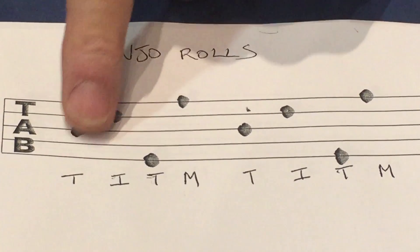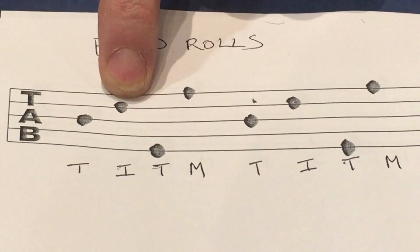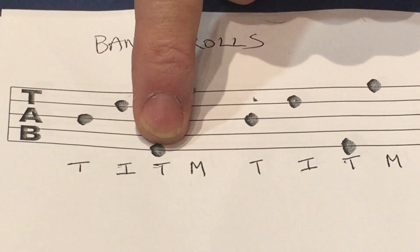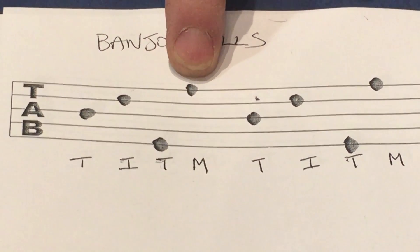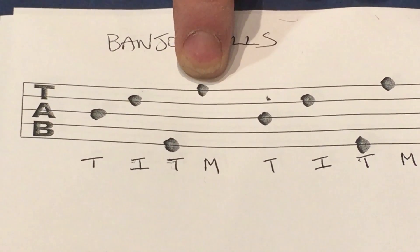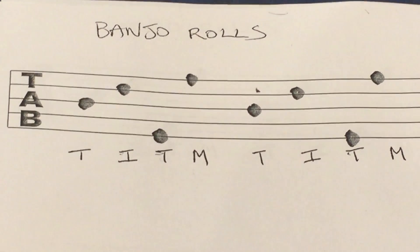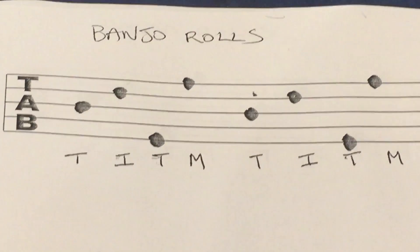And what we're doing, these are the strings on the banjo. This is the G, this is the B, and this is the high string, and this is the D string, the low string. Well it's not the low string, it's on the other end of it. It's confusing with banjo because we've got a high string on the bottom of the instrument, so to speak.